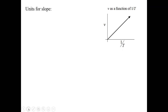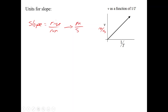For units of slope, we know slope equals rise over run. The units for rise, if it's speed, are meters per second. That's divided by one over period, which is one over seconds. The seconds cancel, so our units for slope should be in meters.